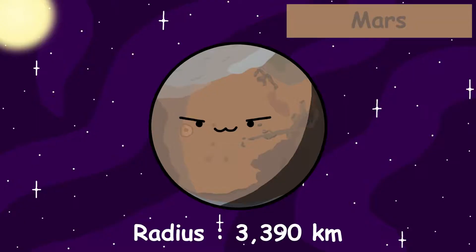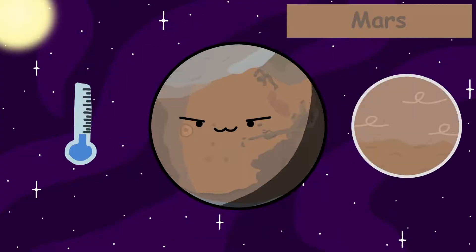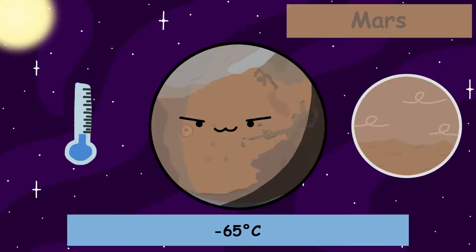Mars has a radius of 3,390 kilometers and a thin atmosphere, mainly composed of carbon dioxide. Mars is a cold and desolate world. It has an average surface temperature of negative 65 degrees Celsius.